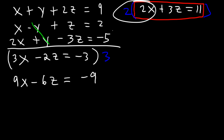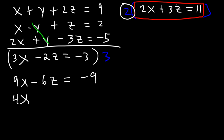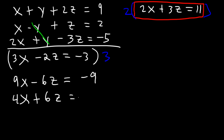Now, let's multiply 2x plus 3z equals 11 by 2. 2 times 2x is 4x, 2 times 3z is positive 6z, and 2 times 11 is 22.